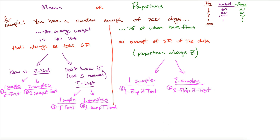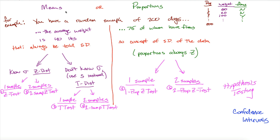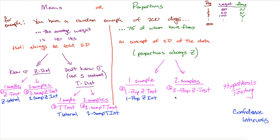If that makes sense, you actually understand 12 calculator functions — because there's an equivalent version of each of those six that deals with confidence intervals instead of hypothesis testing. Just like there's a z test, there's a z interval. Just like a two sample z test, there's a two sample z interval. Same idea for t tests and two sample t tests — t interval and two sample t interval. And for proportions, one prop z interval and two prop z interval.